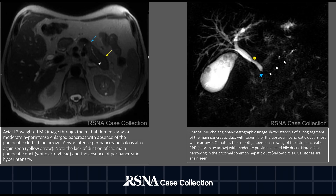In the axial T2-weighted image, we can see a moderate hyperintense and large pancreas that has lost the clefts, pointed by the blue arrow. A hypointense peripancreatic halo is also seen, marked by the yellow arrow. The white arrowhead points to the non-dilated pancreatic duct. Note also the absence of a significant peripancreatic hyperintensity.